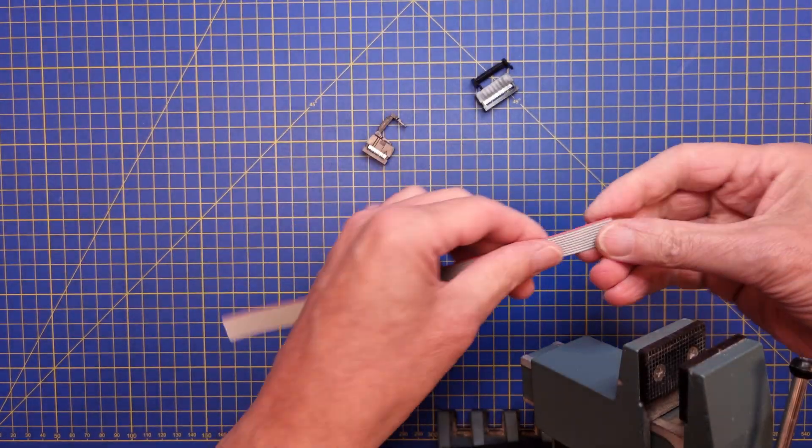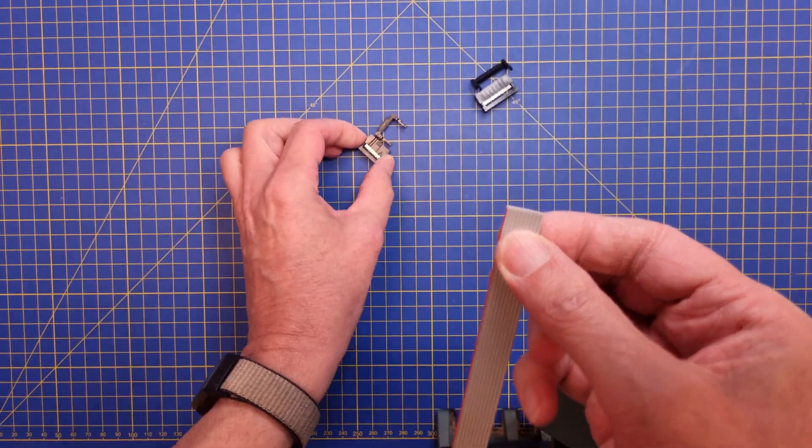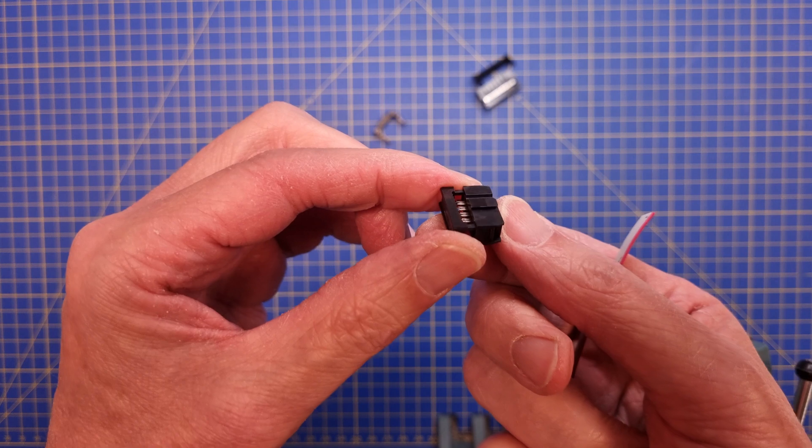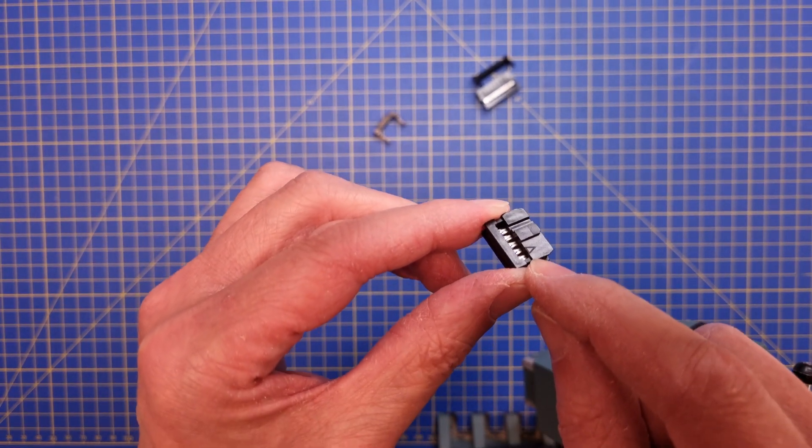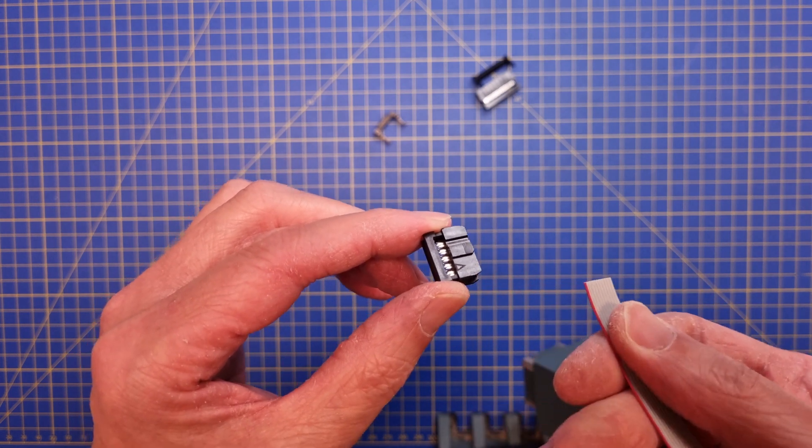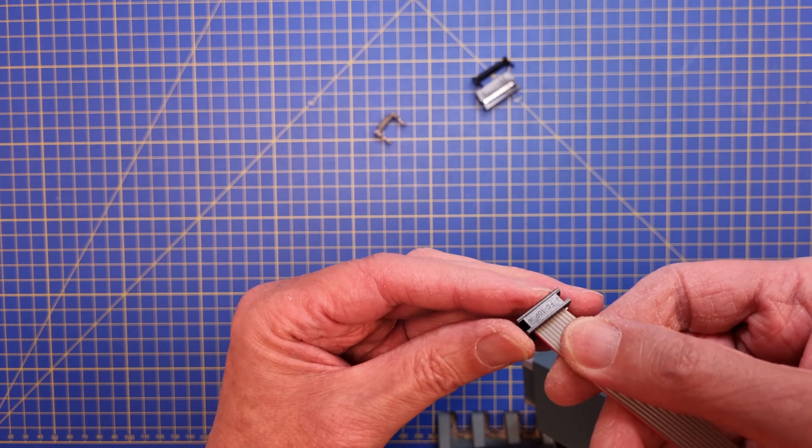All right, let's get started. First you need to locate a red stripe on the flat cable. We need to align that with pin 1 on the IDC header connector. The connector has a small triangle mark to identify where pin 1 is. I always place the cable so it extends at the side where the triangle is. That way I can keep all my cables looking the same.